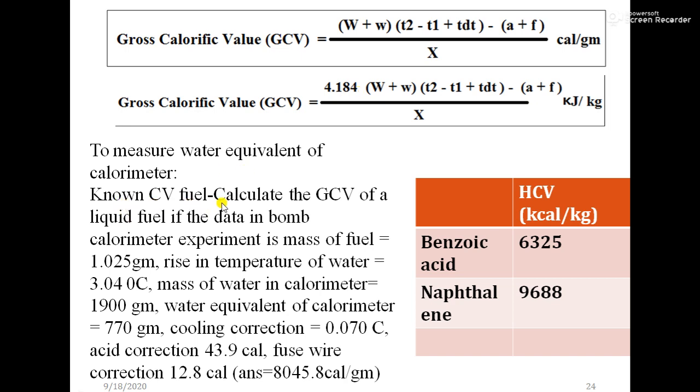Known CV of fuel, calculate the GCV of a liquid fuel if the data in the bomb calorimeter experiment is: mass of the fuel 1.025 gram, that is x. Rise in temperature of water is 3.04°C, that is t2 minus t1. Mass of the water in the calorimeter is w.